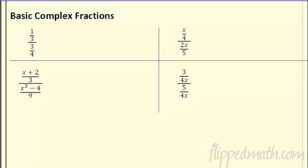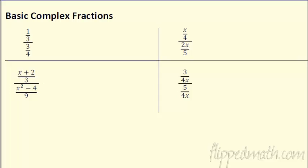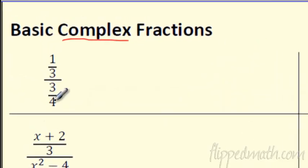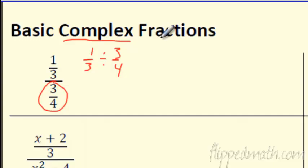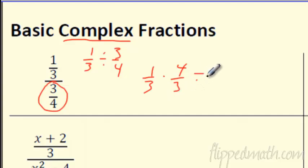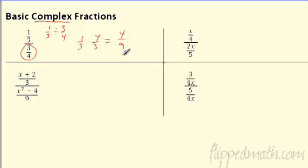Alright, here we go — moving on. So we did multiplication and division. Here's another type of division that's going to lead to the whole realm of complex fractions. A complex fraction means a fraction divided by a fraction. Really, we've done these — it just means this. Sometimes we're going to have fractions and fractions. If I had this, you'd flip the second fraction and multiply. We're going to flip that bottom fraction and multiply, so it's 1 third times — flip that over — 4 thirds. I'm left with 4 ninths.